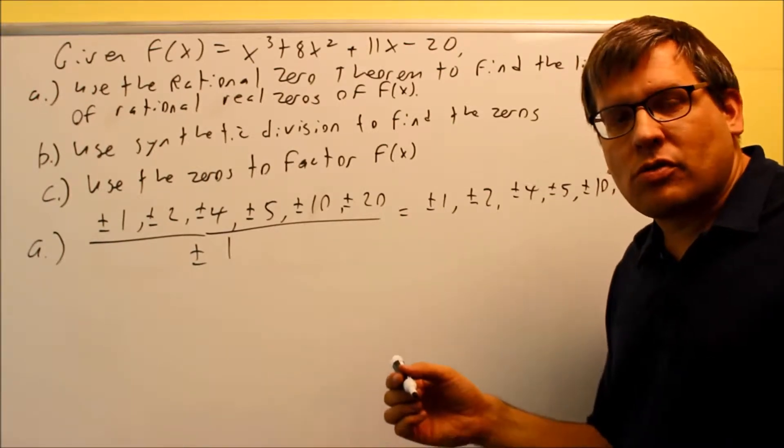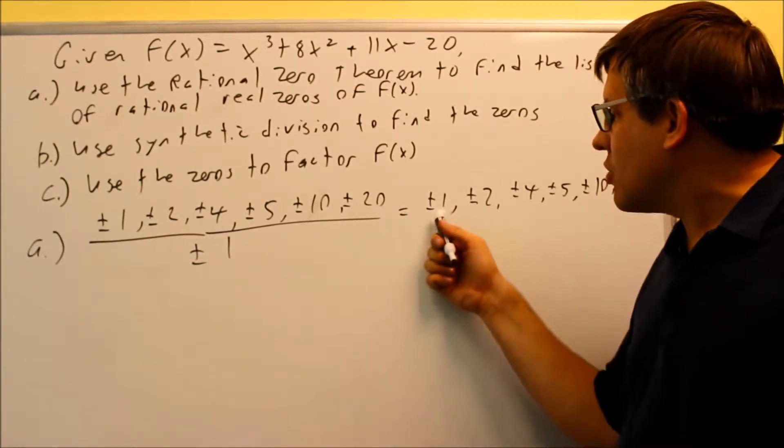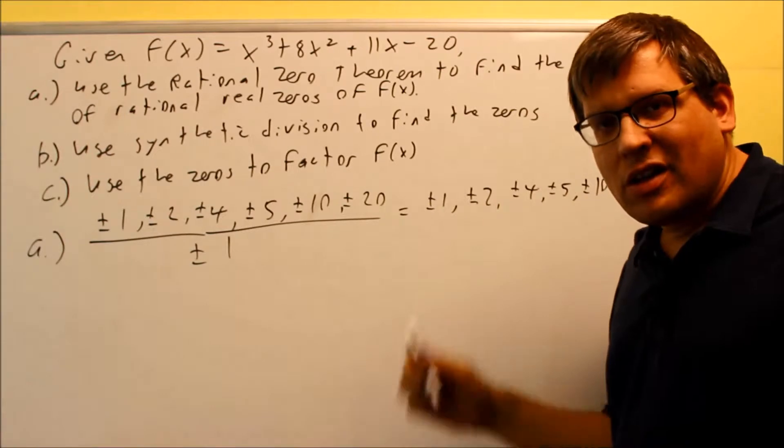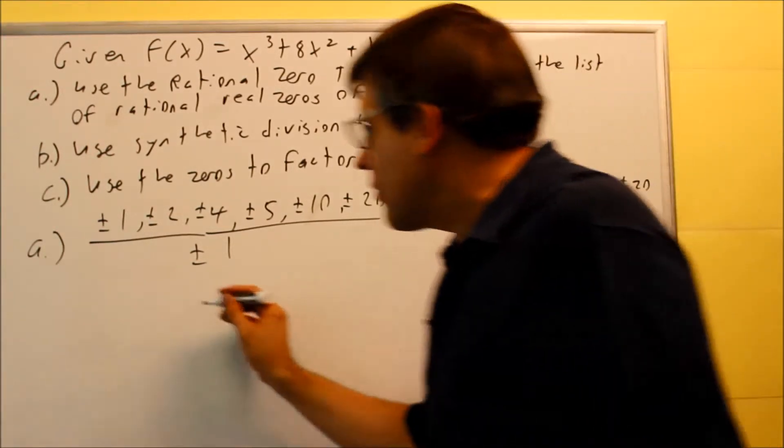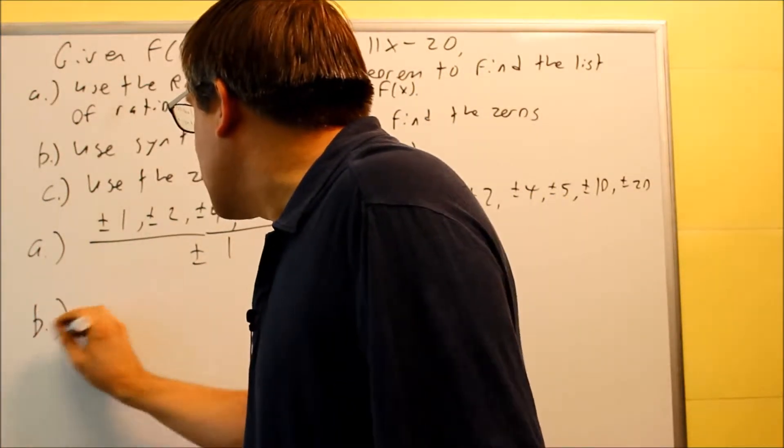The other way and what the book shows is again you're testing each of these putting all them in one by one with synthetic division until you find one that gets a remainder of zero. So again you have a couple different options there.